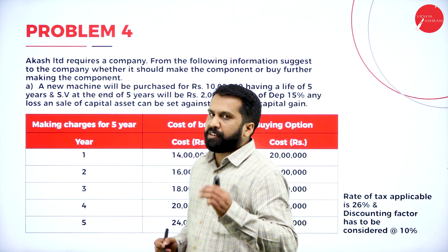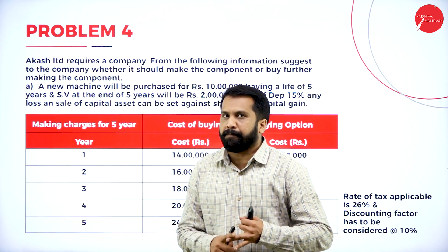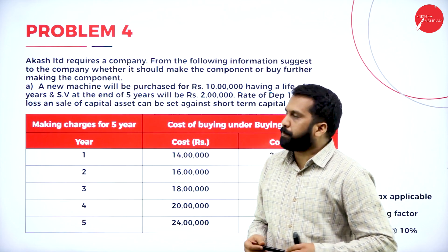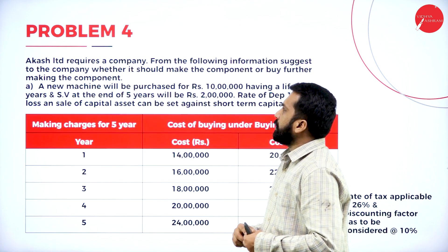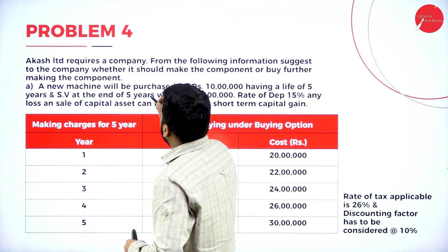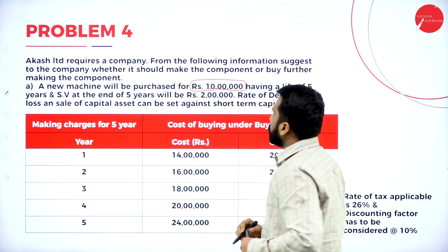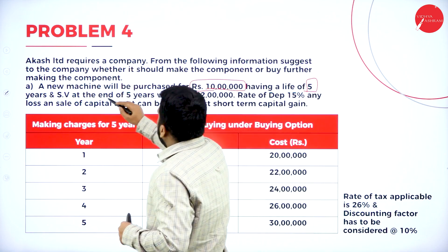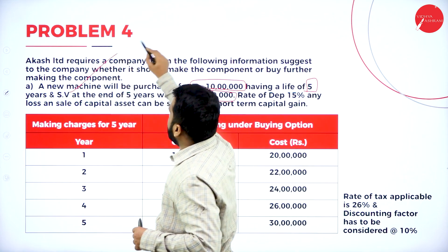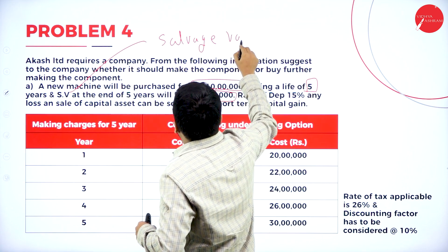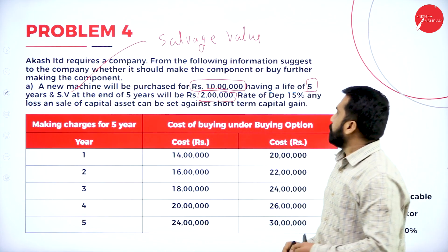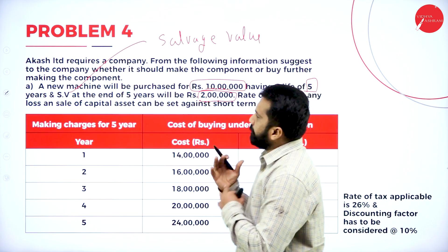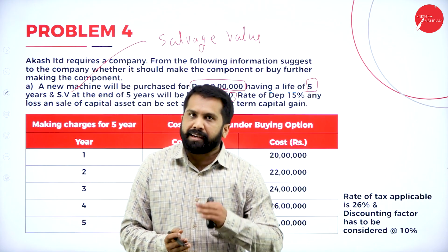Problems on make or buy decision — Problem number 4. We are done with 3 problems in the previous session, and now we are on problems 4 and 5 in today's session. Our Cash Limited required company — from the following information, suggest to the company whether it should make the component or buy. For making the component, a new machine will be purchased for 10 lakh, having a life of 5 years, with a salvage value at the end of 5 years.